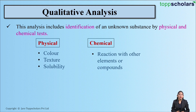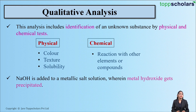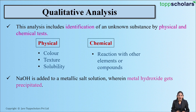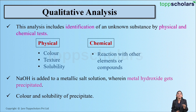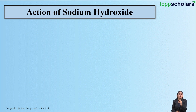In this particular session, we will be talking about identification of an unknown substance by using sodium hydroxide. When sodium hydroxide is added to a metallic salt solution, it results in the precipitation of metal hydroxide. Depending upon the color of the precipitate formed and the solubility of the precipitate in excess of sodium hydroxide, we can easily identify the metal ion present in the given metallic salt solution.